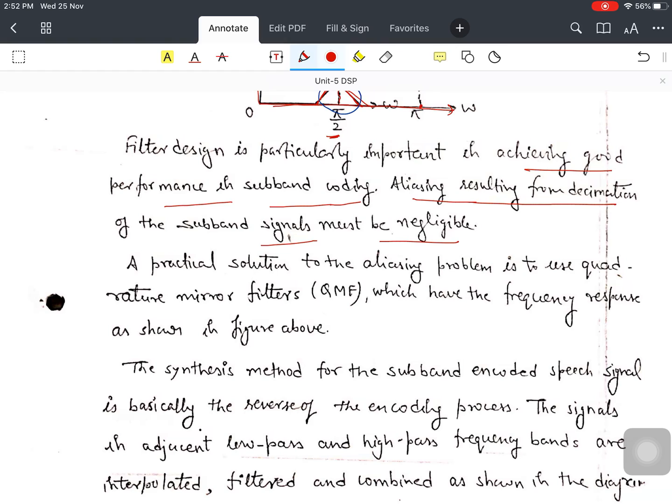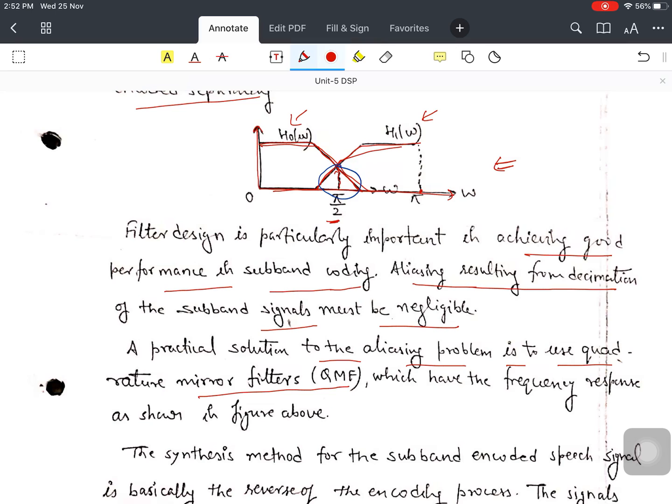A practical solution to the aliasing problem is to use quadrature mirror filters (QMF), which have the frequency response as shown in figure above. Basically, you want to remove this portion, this green portion. It should be negligible.